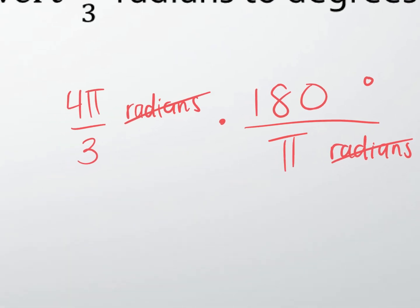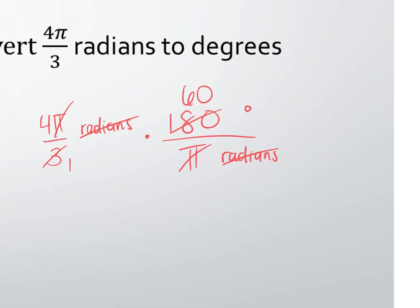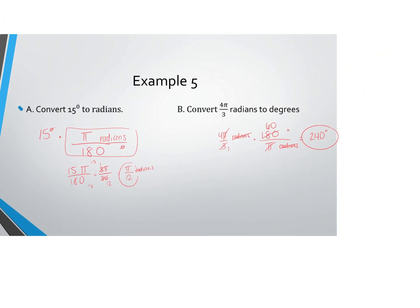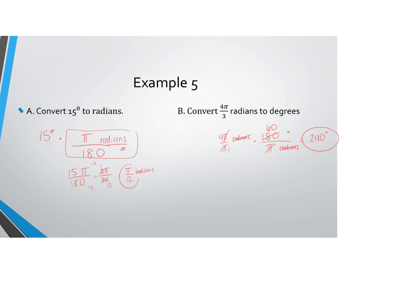How are we feeling? Gio asks how you know when to use 360 or 180. That's your choice — you can use either one. But if you use 360, you have to pair it with 2π; if you use 180, pair it with π. It's easier to use 180. Any other questions?